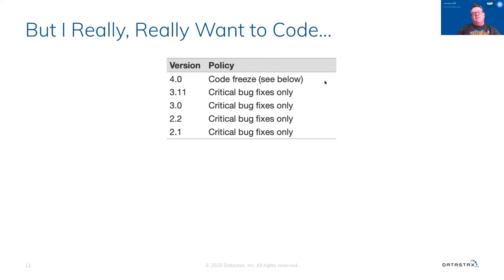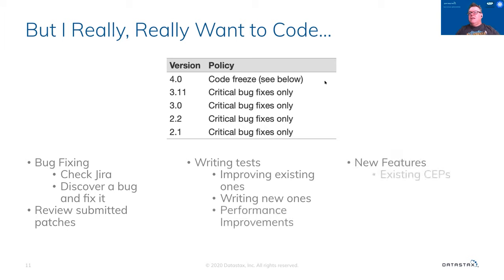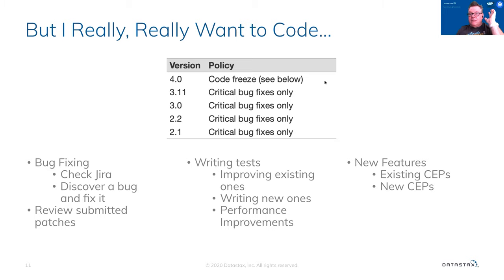We have other versions that are now in critical bug fix — there's still some work that can be done there, but 4.0 is the one you want. Bug fixing — if you find a bug or go look for a bug — writing tests, and new features: if you want to build a new feature for Cassandra, you could talk to me personally. I want to hear all about it, because this is a really interesting database and adding things to it is really fun.